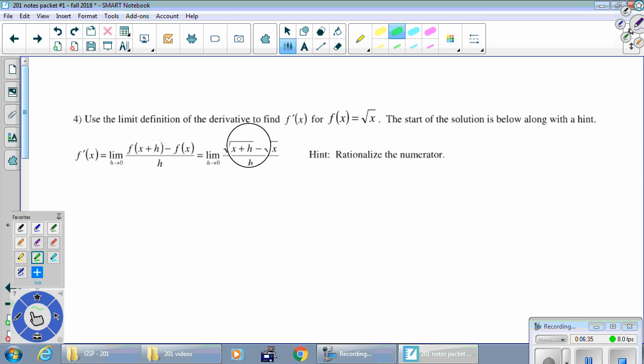Okay. So our technique here is to rationalize wherever the radicals are. In this case, they're in the top. So I'm going to multiply up here by the conjugate of the top. So root x plus h, root x, all we do is change the sign in between. And whatever I do on the top, I better do on the bottom as well.